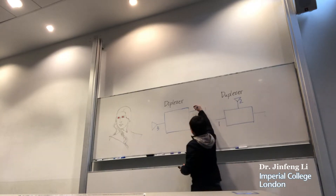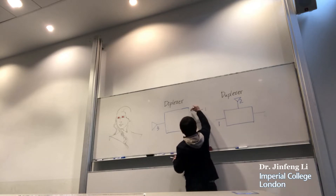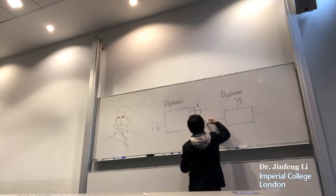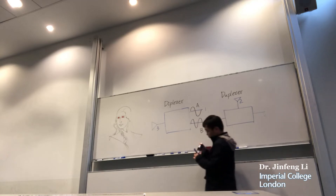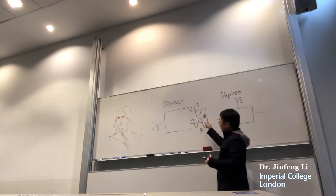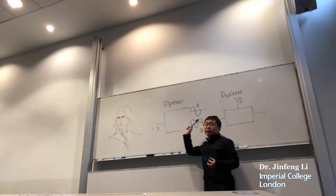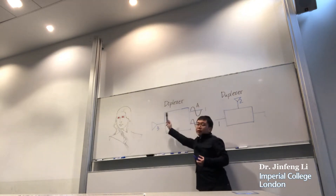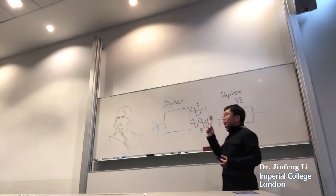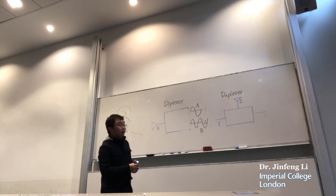For example, there is a signal A of frequency A here, and a signal B of a higher frequency. Signal A enters port 1 and signal B enters port 2. What happens is that the D-Plexa implements frequency multiplexing into a single port.